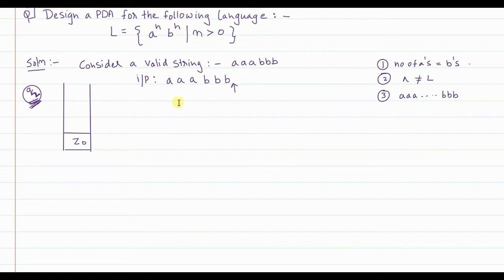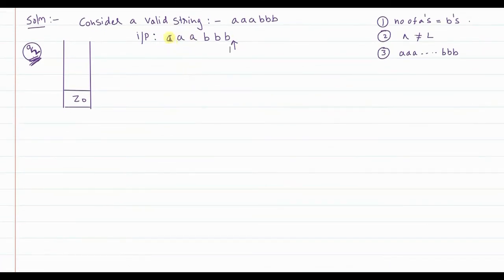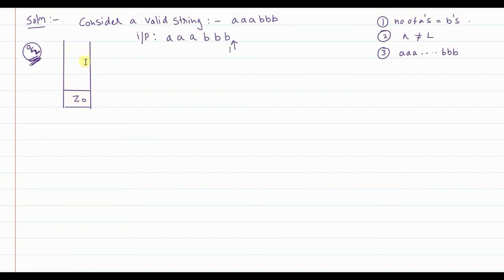When the entire input string is exhausted — meaning null is read as input — and the stack is also empty (z-naught is the topmost element), it means the string is accepted. In this case, from q2 we do nothing and move to the final state q3. This completes the acceptance.